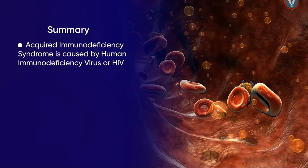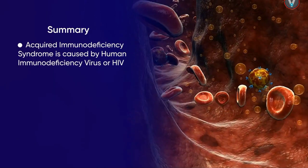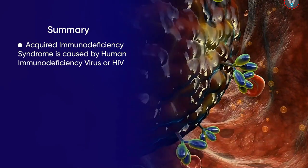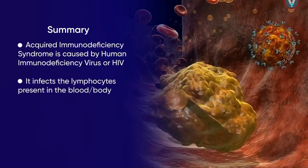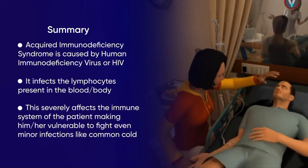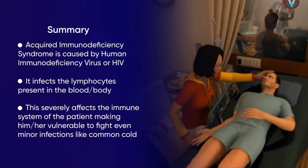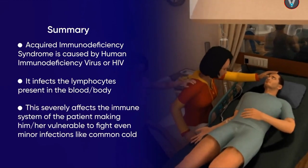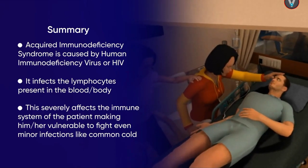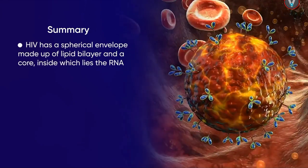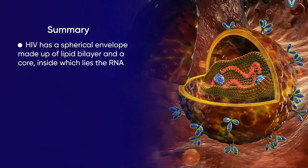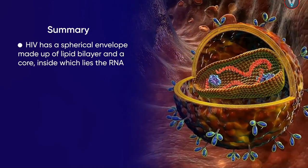To summarize: Acquired immunodeficiency syndrome is caused by Human Immunodeficiency Virus, or HIV. It infects the lymphocytes present in the blood, severely affecting the immune system and making the patient vulnerable to even minor infections like the common cold. HIV has a spherical envelope made of a lipid bilayer and a core inside which lies the RNA.